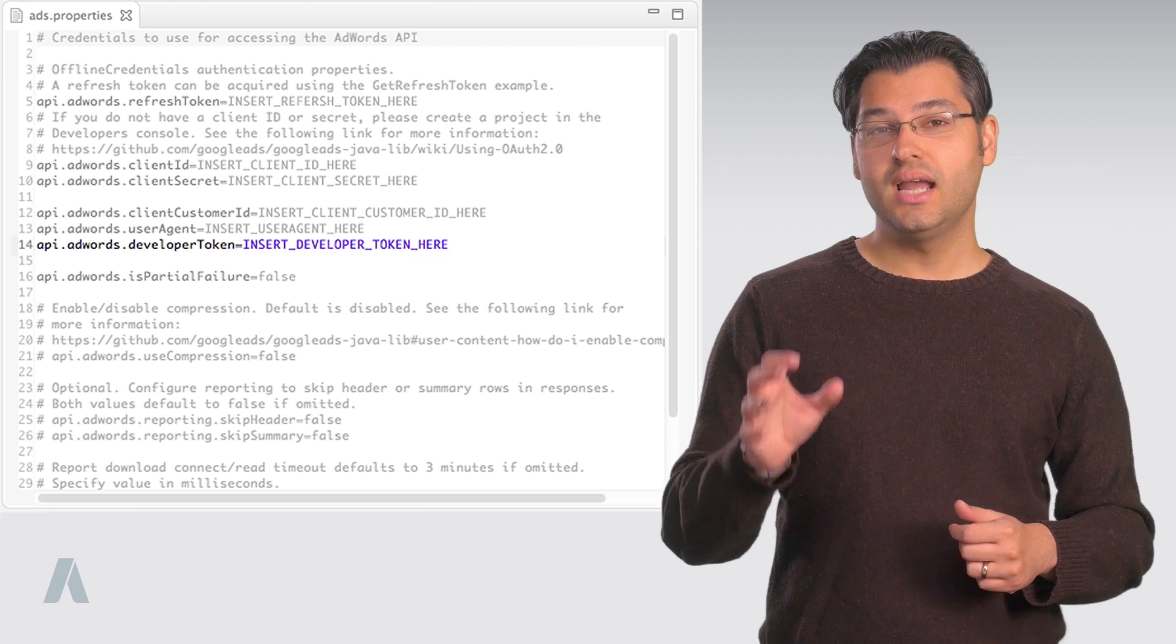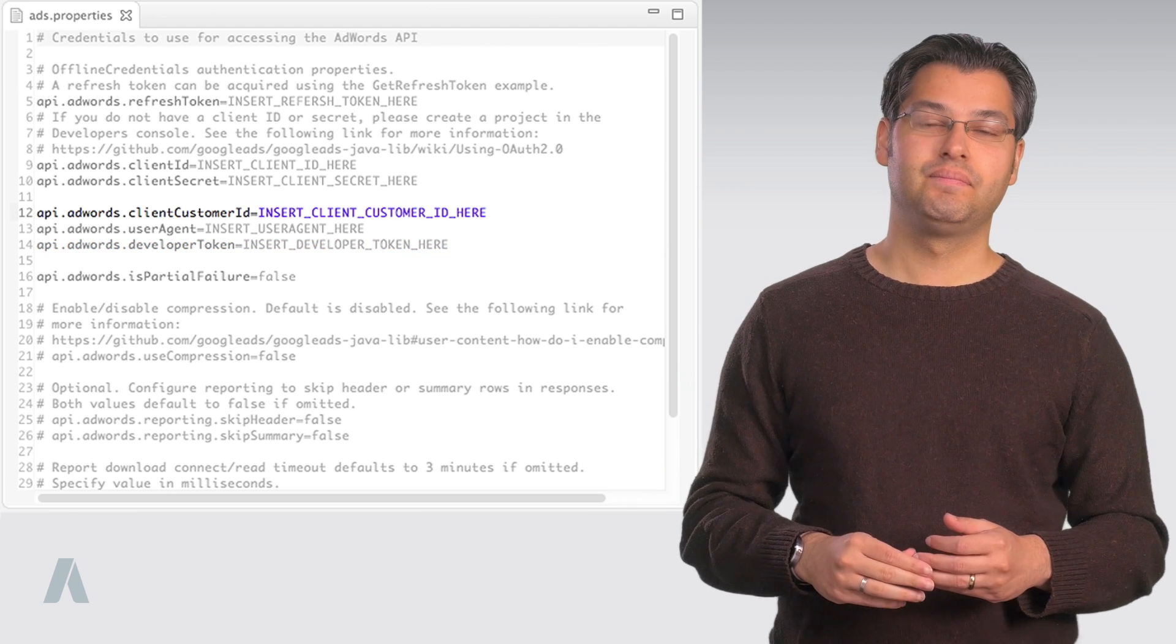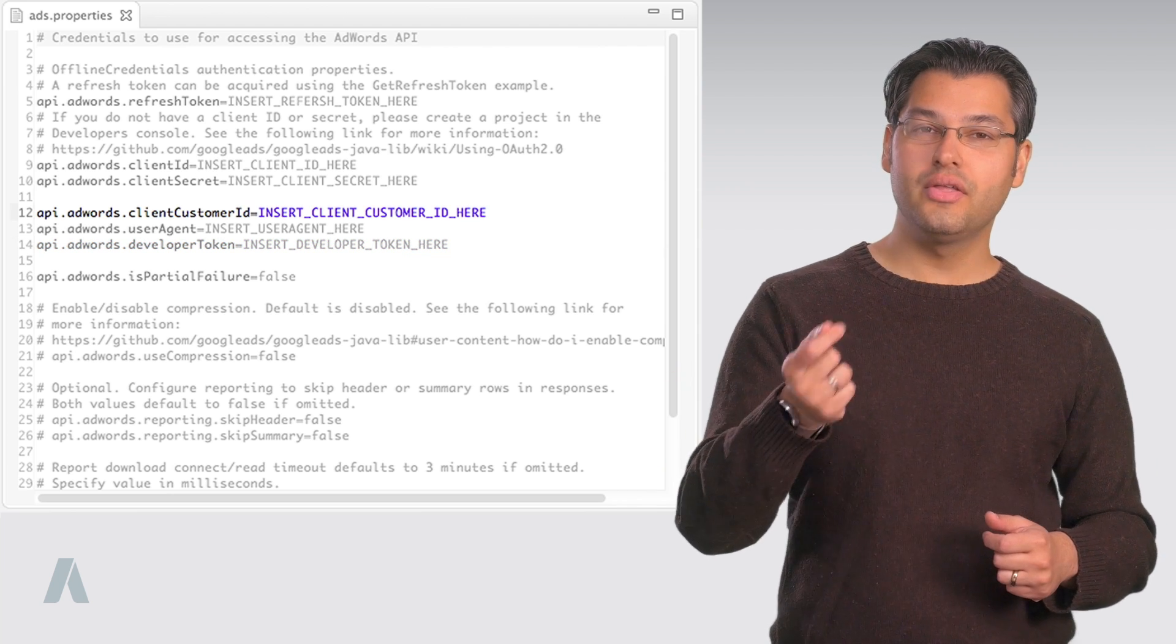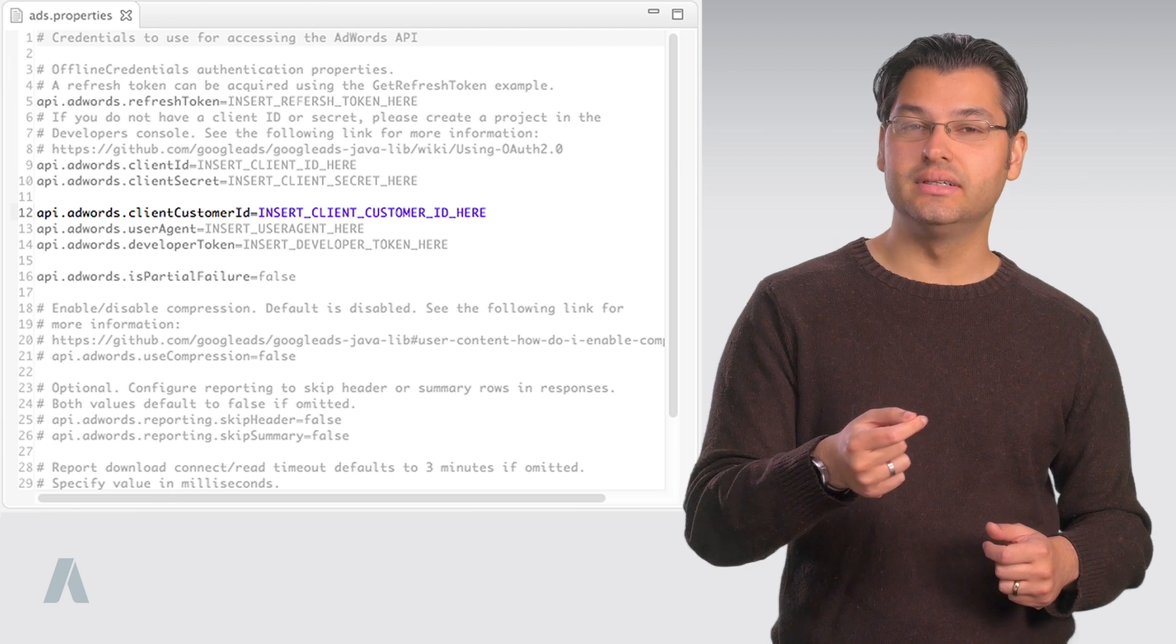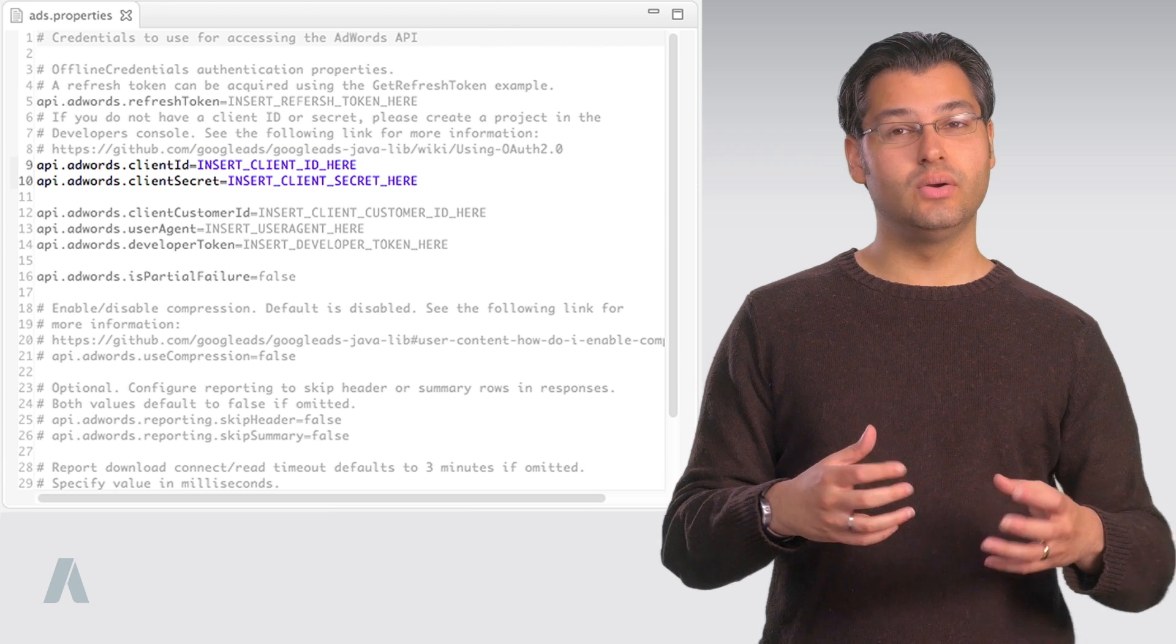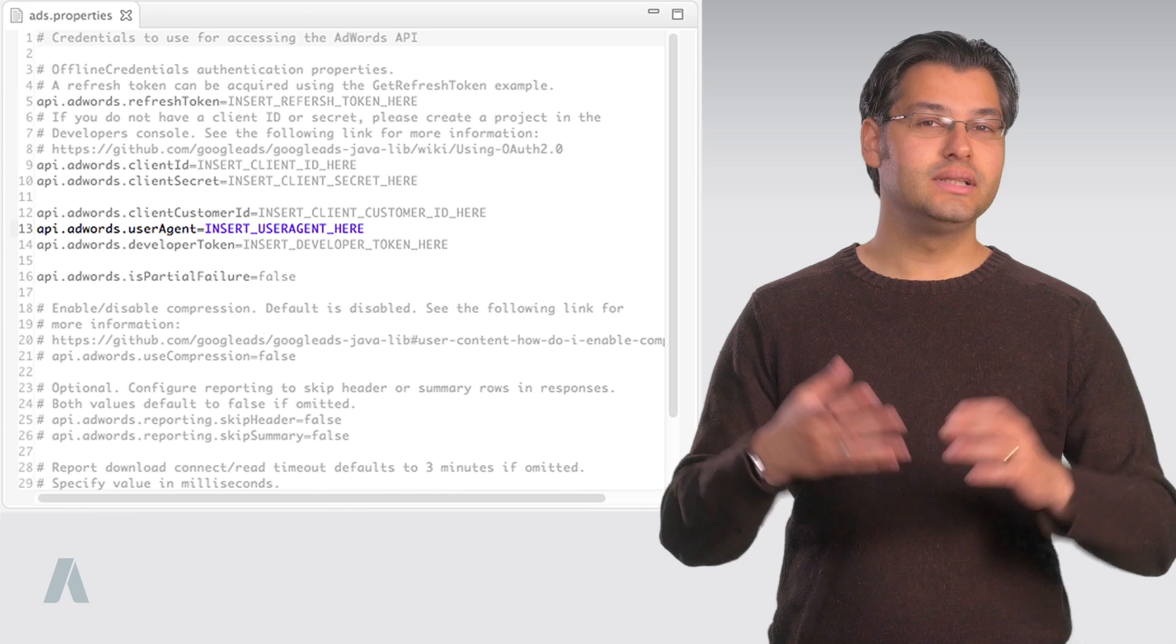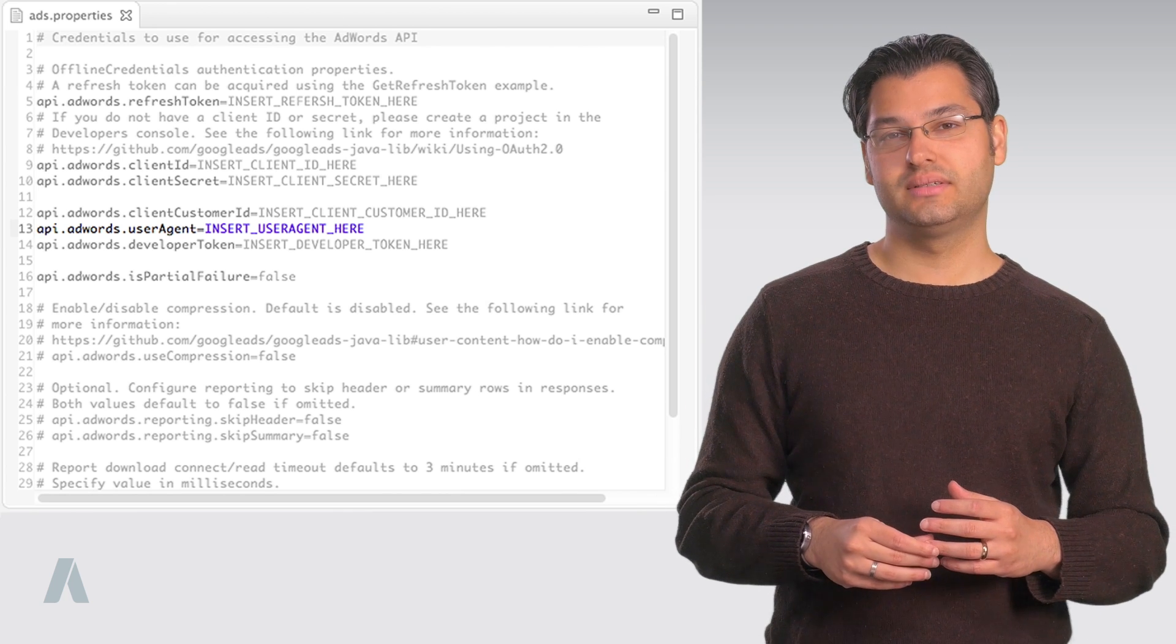Then, enter your test client customer ID on this line. Enter your OAuth 2 client ID and client secret on these lines. Then, enter the name of your application or organization on this line. You can leave any other values at their defaults.